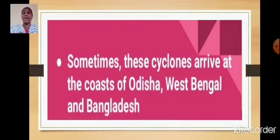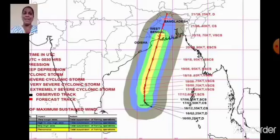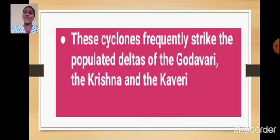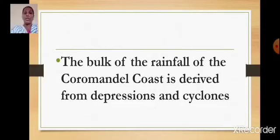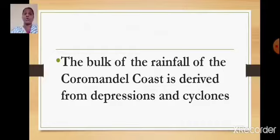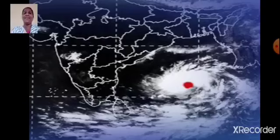Sometimes these cyclones arrive at the coast of Odisha, West Bengal and Bangladesh. They frequently strike the populated deltas of the Godavari, the Krishna and the Kaveri. The bulk of the rainfall of the Coromandel Coast is derived from depressions and cyclones.